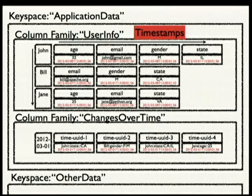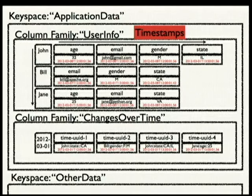Every column name-value pair also has a timestamp associated with it. That timestamp is used for conflict resolution — if multiple people write to a given key with the same column name, the one with the higher timestamp wins. The timestamp is client-provided, so you need to make sure when using Cassandra that if you have multiple clients writing to the system, their clocks are in sync.